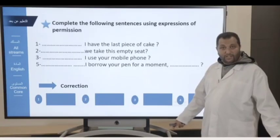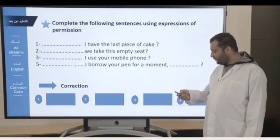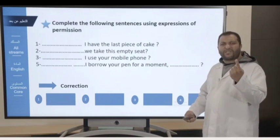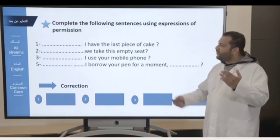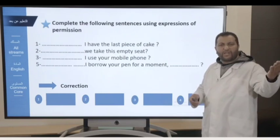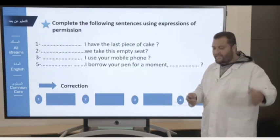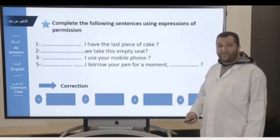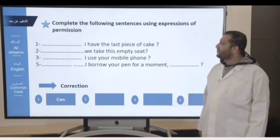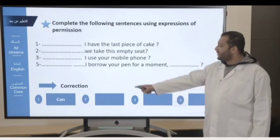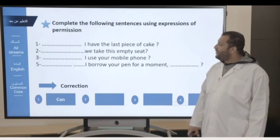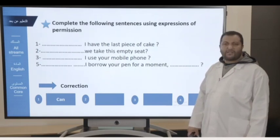Shall we start the correction? Okay. Of course, there isn't only one possibility. For each sentence, there are different possibilities, so you can be selective. For example, number one: Can I have the last piece of cake?